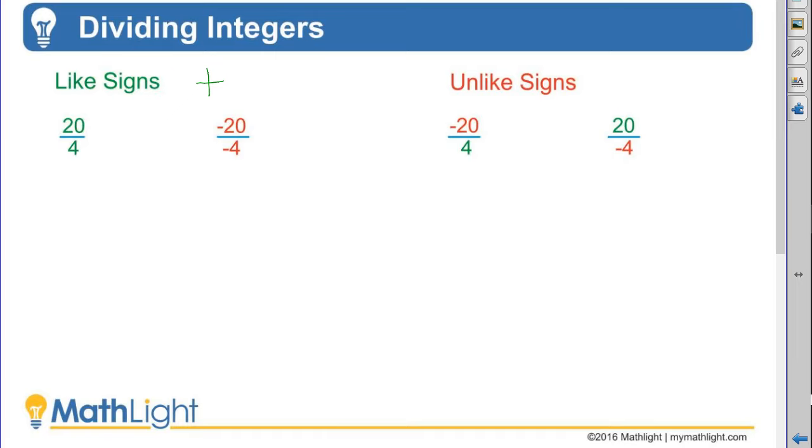A positive divided by a positive is a positive. 20 divided by 4 we know is 5. And therefore, a negative divided by a negative is also a positive, and that's also 5. Very easy, but you've got to pay attention to your signs.